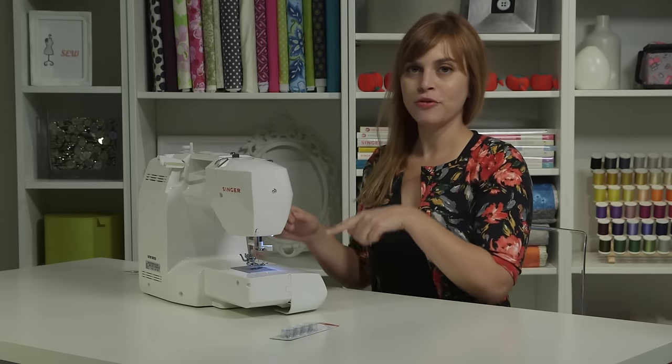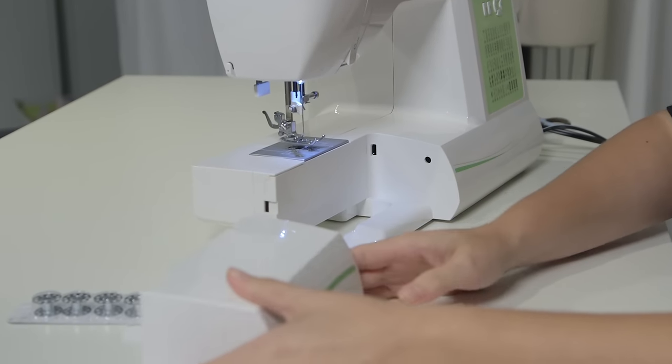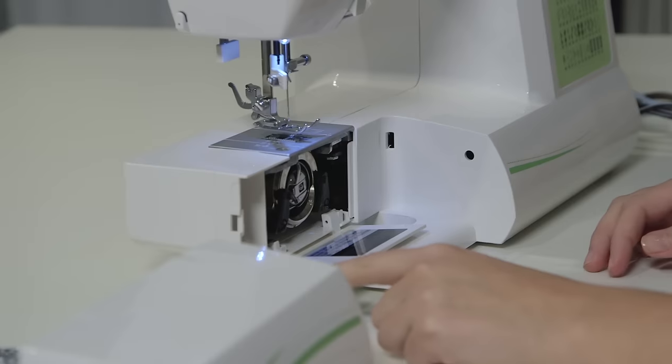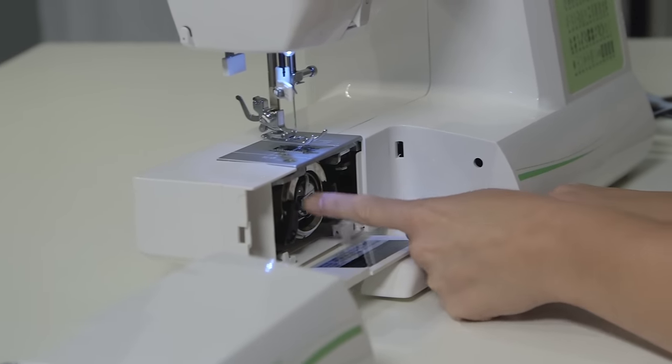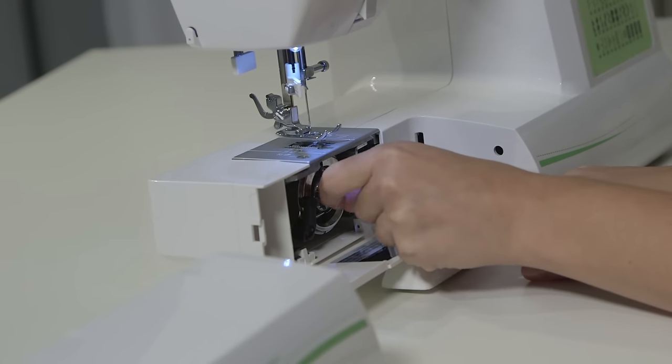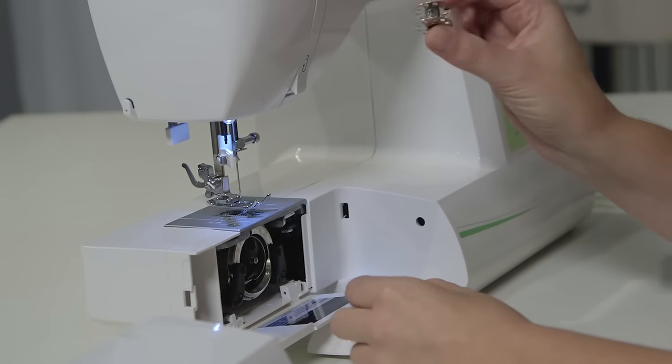We're going to take off the removable storage compartment, which slides off like this. We're going to open the hinged cover, and that will reveal the bobbin compartment. We're going to grab the bobbin case, which is the middle, round piece. There's a hinged latch that you can grab onto. And inside, you'll find an empty bobbin.